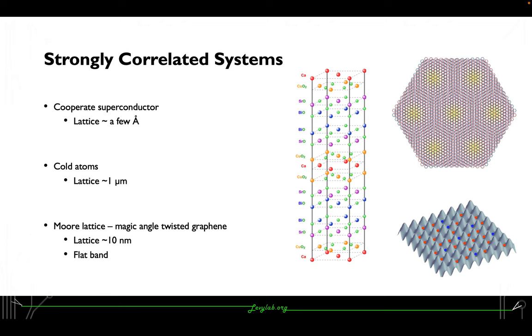One is the cuprate superconductor which has a lattice size of a few angstroms and its high temperature superconductivity drives interest for researchers. The other is the cold atoms which has a lattice size around one micrometer, where we are expecting to see a Hubbard model simulation.